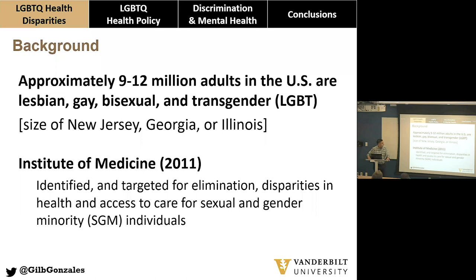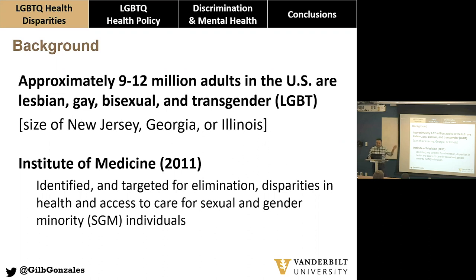It wasn't until 2011 when our federal government for the first time identified and targeted for elimination health disparities affecting LGBTQ populations. The NIH uses the acronym SGM — sexual and gender minorities — for describing this population. I prefer to use LGBTQ because that's what my community partners recognize. Throughout this talk they're interchangeable, but I prefer LGBTQ.